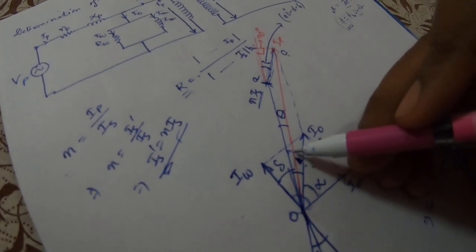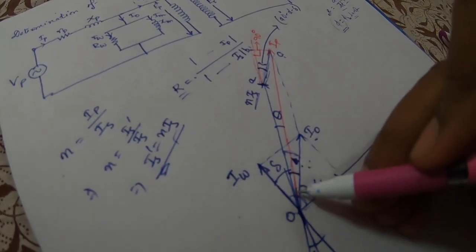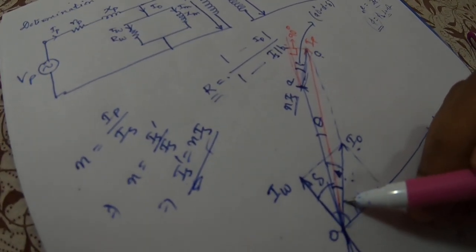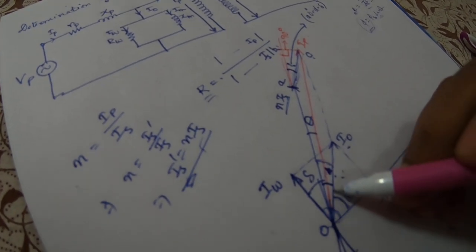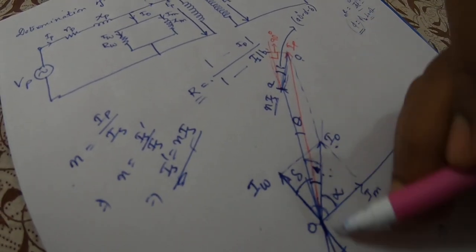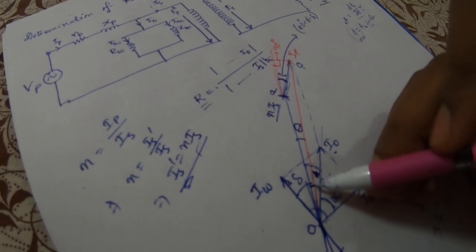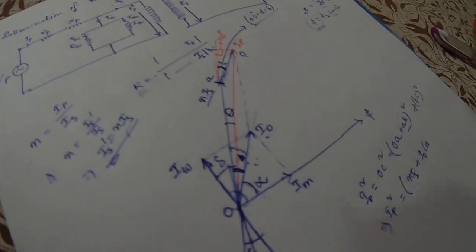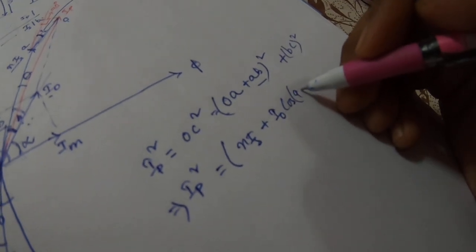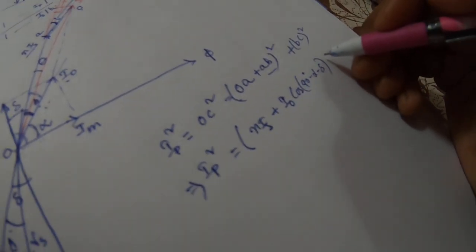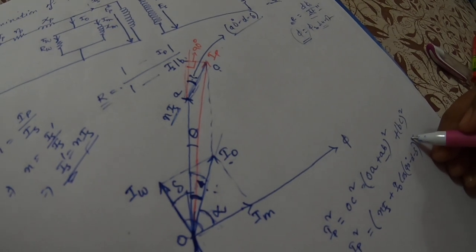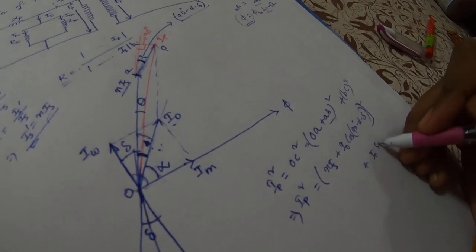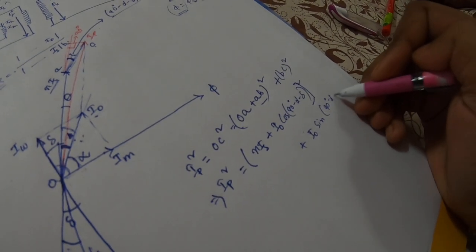This angle equals 90° minus alpha minus delta. Using the parallel line argument — since this is a parallel line with a single transversal — this angle equals that angle. So BC equals I0 sin(90° − α − δ). Therefore we can write the expression under the square root as: nIs plus I0 cos(90° − α − δ), the entire sum squared, plus I0 sin(90° − α − δ) squared.